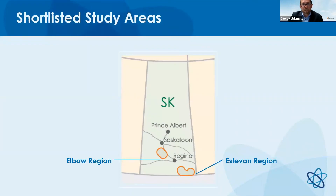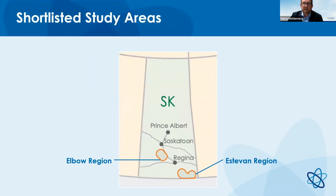We've done a lot of that work and identified two regions that meet this criteria and could support the project. Both regions have characteristics that meet those criteria — large bodies of water, existing power and infrastructure, and potential workforce support. We've identified the Elbow region and the Estevan region as having the most opportunity with the least amount of risk and impact for this potential project.